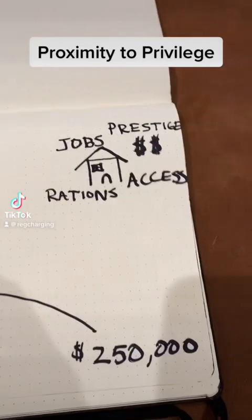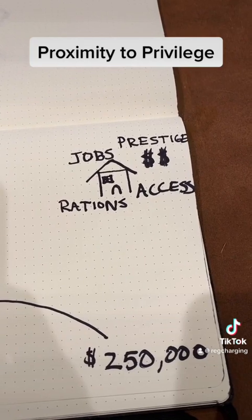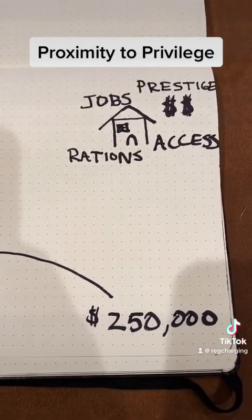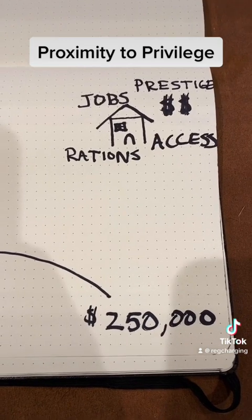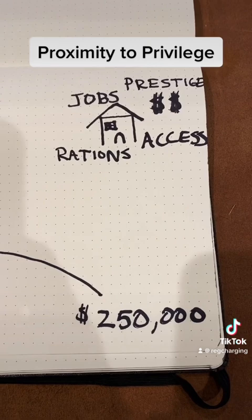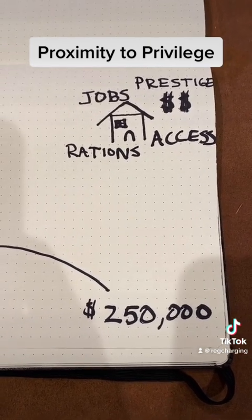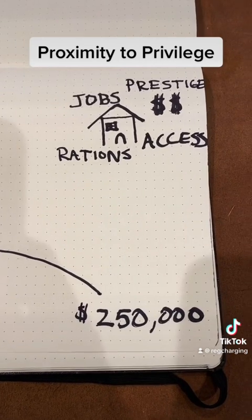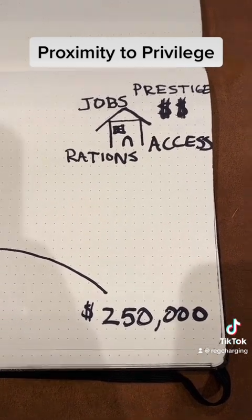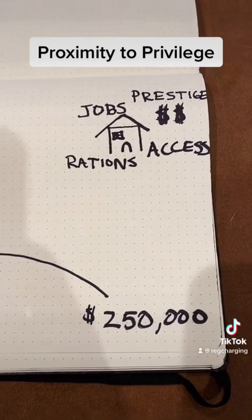I want to explain something about indigenous languages and the proximity to privilege. Why we have some relatives who go along with things like the Lakota Language Consortium, a foreign publishing company. Some Lakotas agree with them. This is a story as old as time — there are always going to be Lakotas working against other Lakotas. And here's why: it's the proximity to privilege.